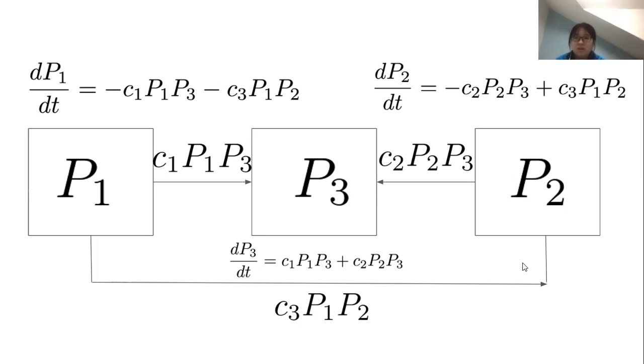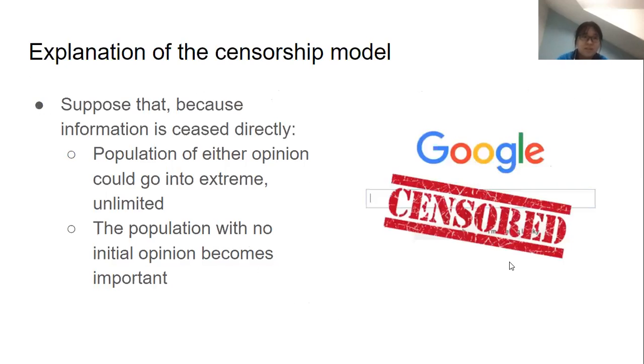There are some unique points about the censorship model that make it very different from the warning model. We suspect that since information inclined to one side is ceased directly, there could be more extreme behavior in either population and the change may be more obvious and severe. So we put no limit, either upper or lower, on the number of people that could be reached in each group. In contrast, for the warning model we put a limiting factor on the population of P1.